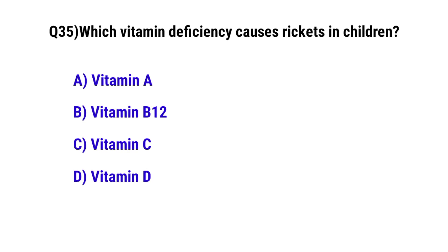Question number 35. Which vitamin deficiency causes rickets in children? The correct option is B: Vitamin D.